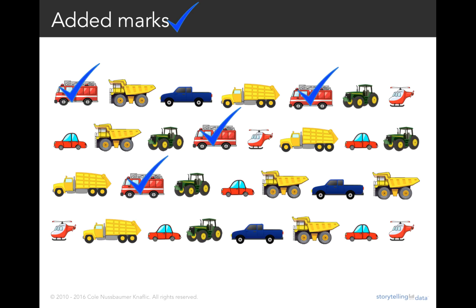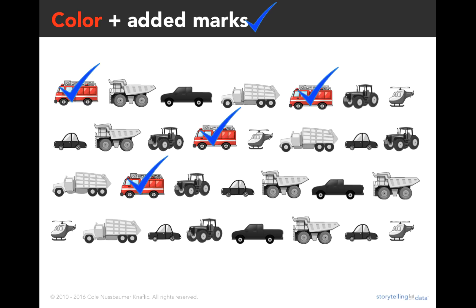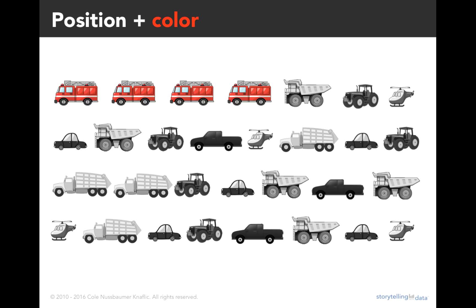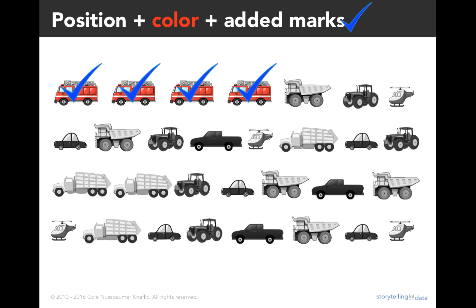We can also layer these pre-attentive attributes. Here's what it looks like if I do color together with check marks. Or I could do position and color — notice how quick it is to see there are four fire trucks; you don't have to scan through every single line. You can glance at it and know there are four. Or we could do position, color, and added marks — probably a little overkill, but for illustrative purposes. Another added mark would be drawing circles around the fire trucks to call attention to them. These are visual cues that tell our audience: this is important. I've positioned it to make it easy, colored it to draw importance, and added marks to make it clear that this is where you're meant to look.